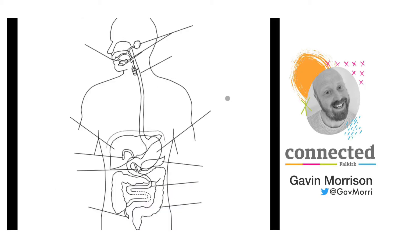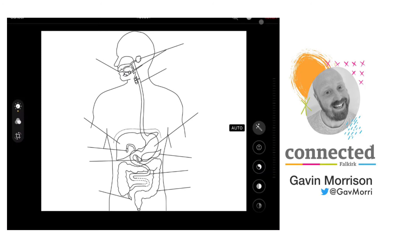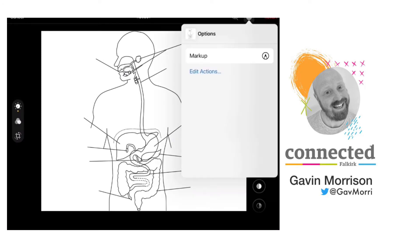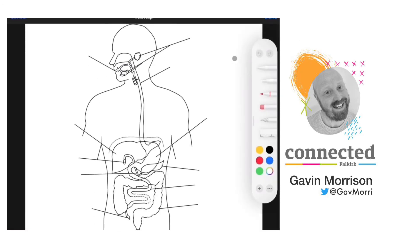You can mark up a photo or an image by tapping on edit at the top right and tapping on the ellipsis at the top of the screen and then selecting markup. That will open up the drawing tools sidebar.